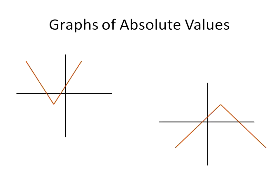Let's look at absolute value graphs. When you have an absolute value, because it goes to a certain point and then when it starts turning negative it goes the other direction, absolute value graphs look like a V. They can be wide or narrow depending on the type of function, but basically they'll look like a V — going up and then down, or down and then up, usually coming to a point at the vertex.